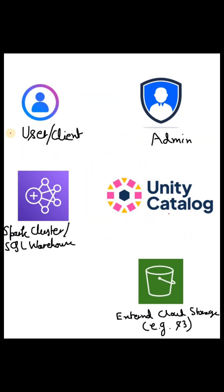The main four players in the data access lifecycle are: the user or client who is requesting data; the Spark cluster or SQL warehouse where we run our queries; Unity Catalog, which handles all data governance-related tasks; and external cloud storage — for example, if you have integrated Databricks with AWS, it can be S3 where managed or external table data is stored.